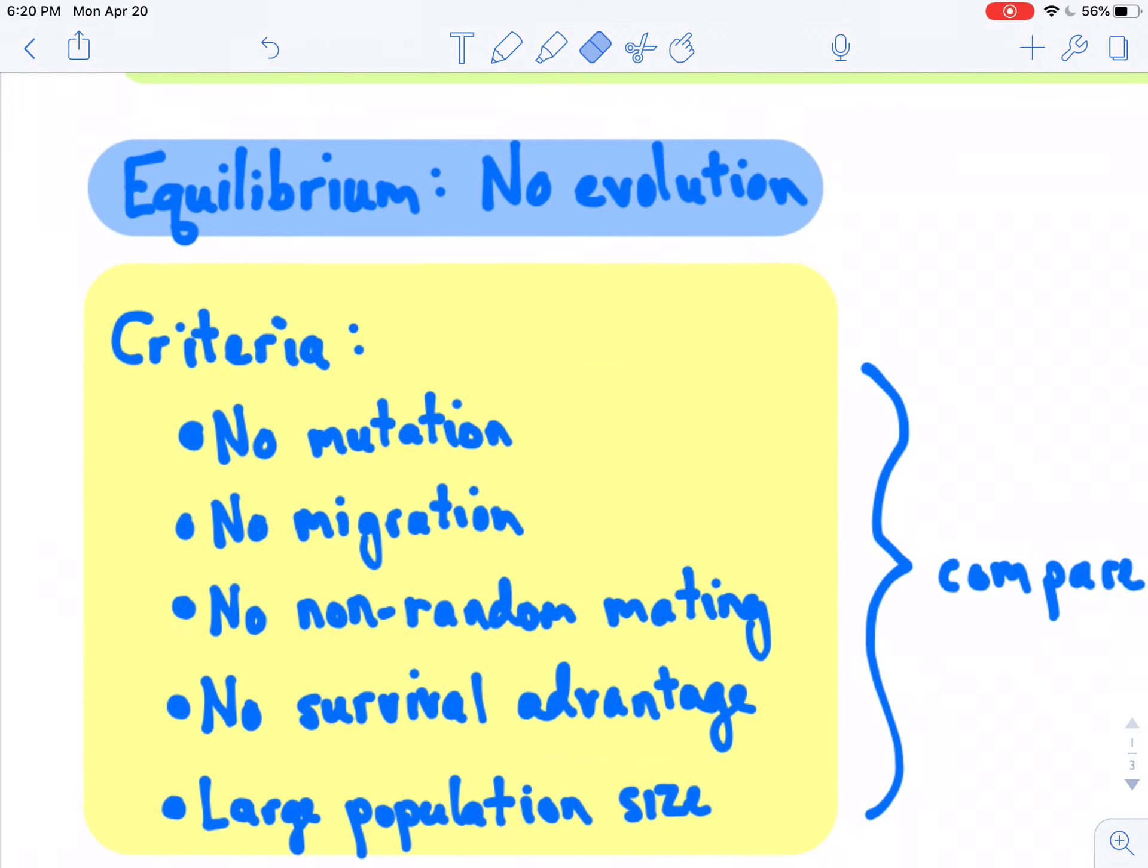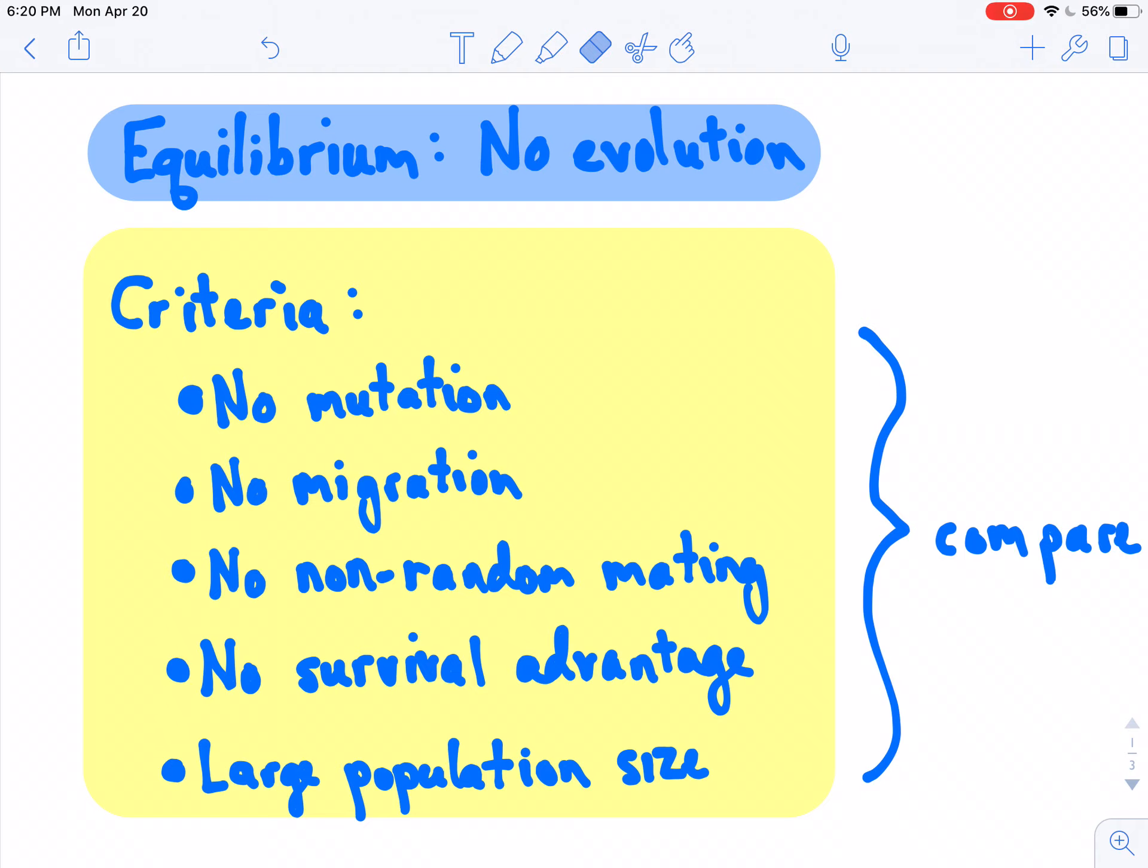So the criteria for no evolution to be occurring means that there is no mutation entering the gene pool of this population. That means there is no migration, neither in nor out of this population, because that could affect the frequencies of certain alleles, therefore certain traits present in the gene pool. We can have no non-random mating, which basically just means that sexual selection cannot be acting here. Every trait needs to have equal reproductive advantage. For that reason, we also must assume that there is no survival advantage. In other words, natural selection is not really a thing in this population.